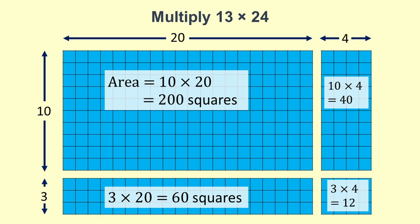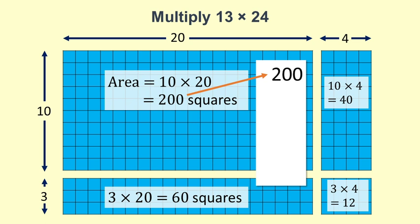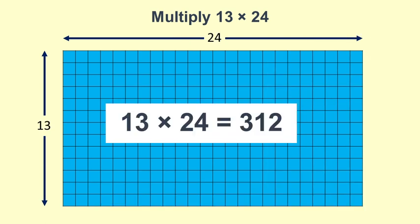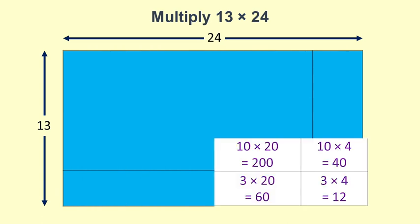To find the total number of squares we add 200 plus 40 plus 60 plus 12 equals 312. Drawing the squares helps with conceptual understanding. If we need reassurance that it works we can even count the squares. However, once the concept is clear we do not need to keep drawing all the little squares. We can use a grid with numbers.